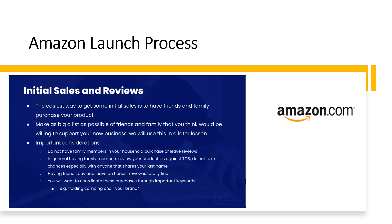For your initial sales and reviews, the easiest way to get some is to have friends and family purchase your product. Make as big a list as possible of friends and family willing to support your new business. Do not have any family members in your household purchase or leave reviews — having family members review your product is against Amazon Terms of Service. Do not take chances, especially with anyone sharing your last name. Having friends buy and leave an honest review is totally fine. Coordinate these purchases through important keywords — for example, if your product is a folding camping chair, have them search 'folding camping chair' then your brand, find your product, and purchase it.